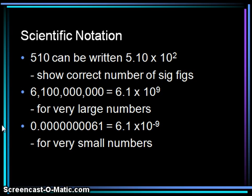Scientific notation. We use scientific notation in chemistry for three reasons. The first is to show the correct number of significant figures — if we have 510 with only 2 sig figs but need to record it as 3 sig figs, we write it in scientific notation as 5.10 times 10 to the 2. All numbers in scientific notation must be at least 1 and less than 10, so we wouldn't write 51.0 times 10 to the 1.